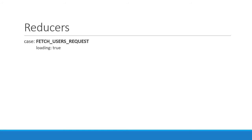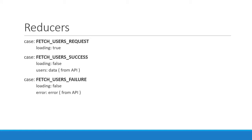Finally let's talk about the reducer function. If the action type is FETCH_USERS_REQUEST we basically set loading to true. If the action type is FETCH_USERS_SUCCESS we set loading to false and users to the data returned from the API. If the action type is FETCH_USERS_FAILURE we set loading to false and error to the error returned by the API. And that is pretty much our application, so with these points in mind let's go back to our editor and implement the code.